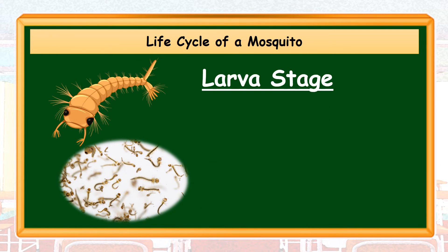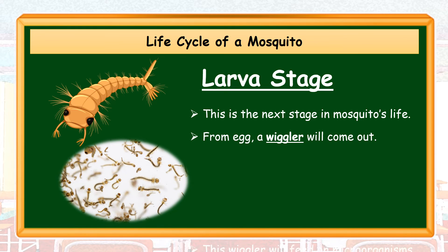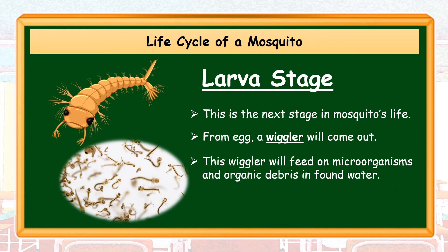Larva stage. This is the next stage in the mosquito's life. From the egg, a wiggler will come out. This wiggler will feed on microorganisms and organic debris found in water.